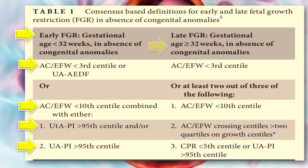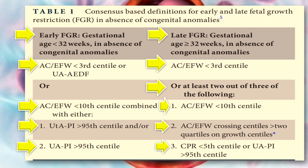Late FGR means gestational age of more than 32 weeks in the absence of congenital anomalies. The AC or EFW is less than the 3rd centile, or at least two out of three of the following criteria are met: AC/EFW less than the 10th centile; AC/EFW crossing more than 2 quartiles on the growth centile chart; or cerebroplacental ratio less than the 5th centile or uterine artery pulsatility index greater than the 95th centile.